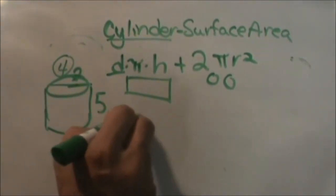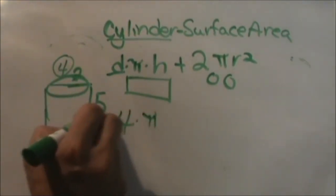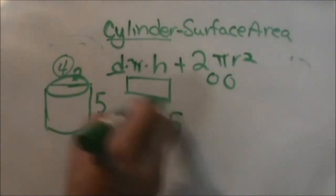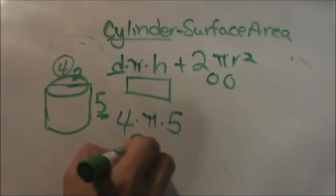So the diameter is 4, so 4 times pi, my height is 5. So just for my lateral area, I'm going to get 20 pi.